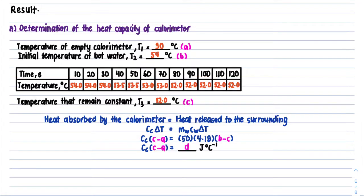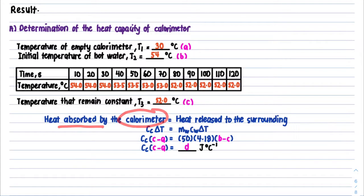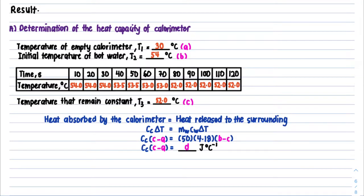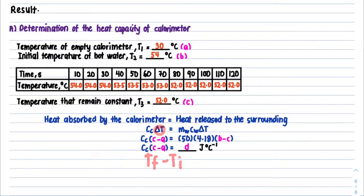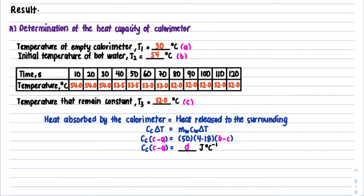Based upon our concept from calorimetry, heat absorbed by the calorimeter equals heat released by the water. Heat absorbed by the calorimeter = CC × ΔT, where ΔT = T_final minus T_initial (final must be the bigger number). The final temperature for the calorimeter is T3, which is the temperature that remains constant. The initial temperature is the temperature of the empty calorimeter.